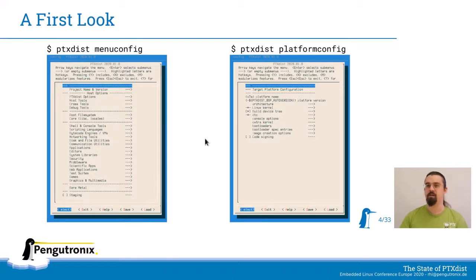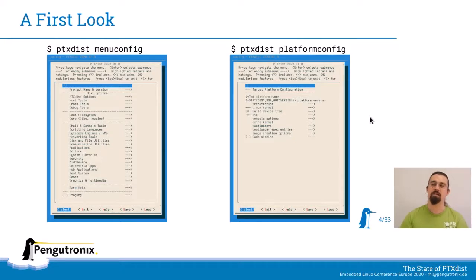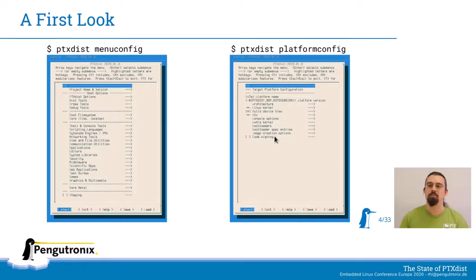On the other hand, you have the platform configuration menu. This is everything bare metal, like configuring the Linux kernel, a device tree compiler, some console options, some boot loaders, and the images that you want to build for your hardware.